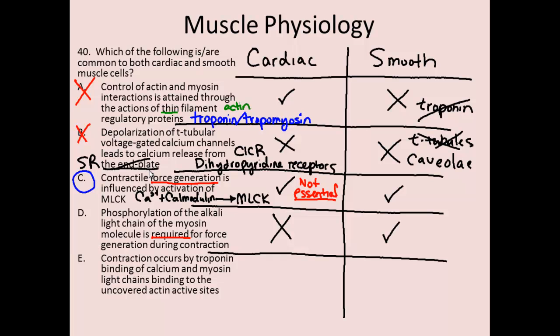The last response: contraction occurs by troponin binding of calcium and myosin light chains binding to the uncovered active sites. This does certainly occur in cardiac muscle, but as discussed earlier, we do not see that regulatory role of troponin in smooth muscle. So that would be incorrect for smooth muscle.